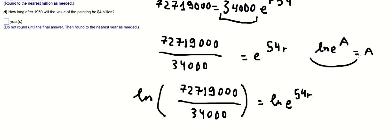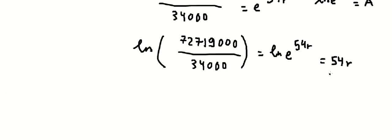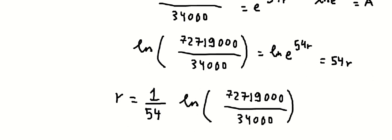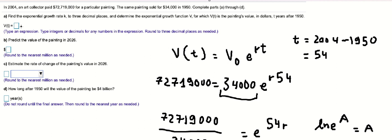So capital A is about 54 in here, then we divide by that number. So this gives us 0.142, and now we can write the full exponential growth function as the answer.